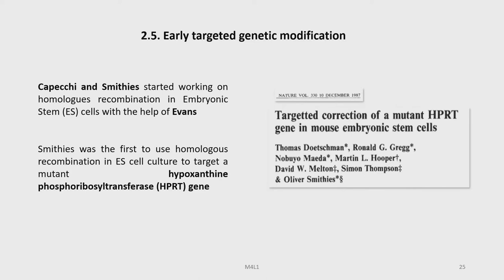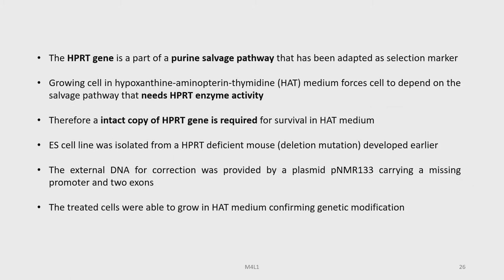Let us now discuss early targeted genetic modification. Capecchi and Smithies started working on homologous recombination in embryonic stem cells with the help of Evans, and they published this work in Nature titled 'Targeted Correction of a Mutant HPRT Gene in Mouse Embryonic Stem Cells.' Smithies was the first to use homologous recombination in ES cell culture to target a mutant hypoxanthine phosphoribosyltransferase, or HPRT, gene. The HPRT gene is part of a purine salvage pathway that has been adopted as a selection marker.